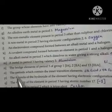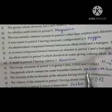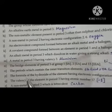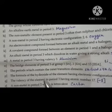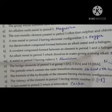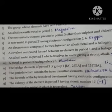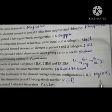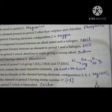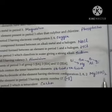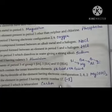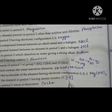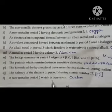The periods which contain inner transition elements are the sixth and seventh periods. The formula of the hydroxide of the element having electronic configuration 2,8,8,2 is Mg(OH)₂ — magnesium hydroxide. The valency of the element in period 3 having atomic number 17 is minus one. The metal in period 2 which is tetravalent is carbon.